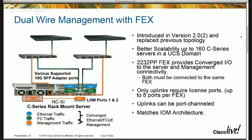Inside a blade chassis, the CIMC's baseboard management controller has separate wire traces to a separate network on the IO module, which is trunked up to the fabric interconnects, alongside the CNA connections. With rack servers we need separate physical wiring. The 2232 topology is much more scalable and cost-effective — plugging directly into the fabric interconnect costs port licenses. With the 2232, you can get 16 servers per FEX in dual-wire mode, where 16 wires handle management and 16 handle the data path.